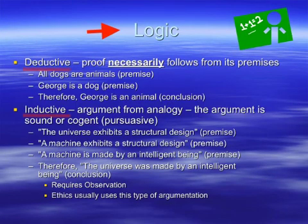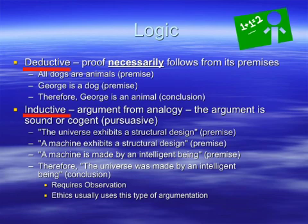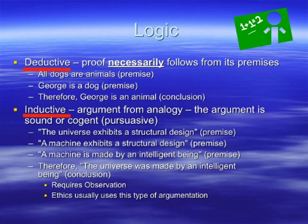There are actually two different forms of logic, or two different ways that we use rational argumentation to arrive at conclusions. The first, as you can see there, is called deductive logic. Deductive logic is a great form of logic because the conclusion that we draw always necessarily follows from its premises. The word 'necessarily' is very important, and that's what sets a deductive logical argument apart from the other kind — inductive — that we'll look at in just a moment.